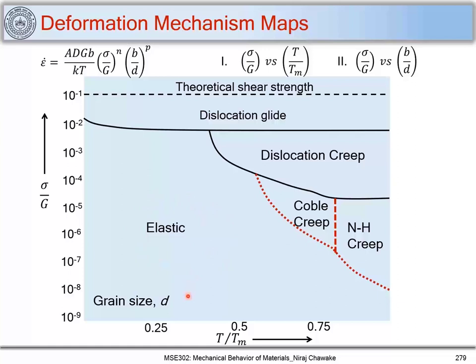This map can be plotted for a specific grain size. Alternatively, we can plot sigma/G versus b/d at constant temperature to see grain size variation and identify different creep mechanisms. These maps guide us: to minimize creep deformation, operate at lower stresses and lower temperatures so the material deforms elastically. To optimize material use, we can identify contributions of different creep mechanisms using these deformation mechanism maps.